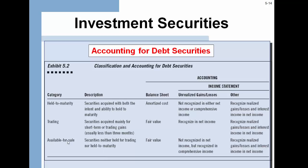For available for sale securities — securities neither held for trading nor held to maturity — you put them at fair value. Unrealized gains and losses are not recognized in the income statement; instead they go into comprehensive income. Then you recognize a gain or loss on the income statement when you actually sell.